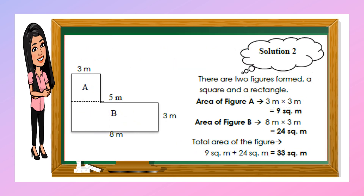For solution number two, there are two figures formed. We will cut the figure differently — letter A is a rectangle and letter B is another rectangle. For figure A: 3 meters times 3 meters equals 9 square meters. For figure B: the area gives 24 square meters. Then we add the two areas: 9 plus 24 equals 33 square meters.